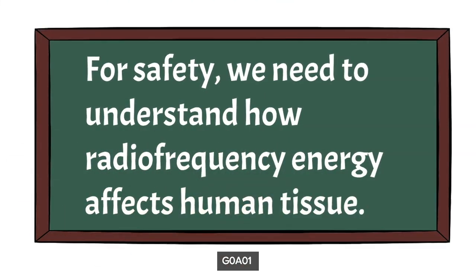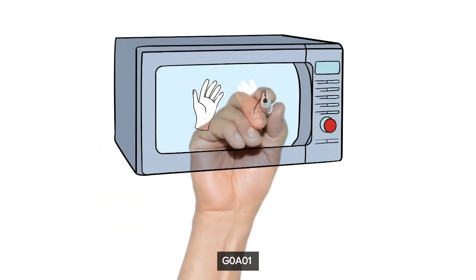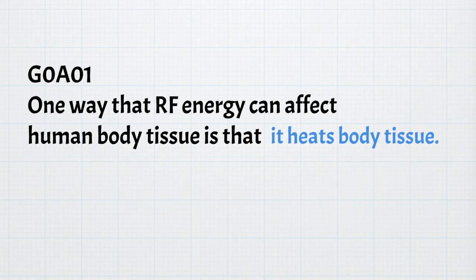Let's begin our safety lessons by understanding how radio frequency energy affects human tissue. Can you imagine your hands being inside a microwave oven? What do you think would happen if they were? Would it surprise you to learn that microwave ovens use radio frequency energy, typically in the 2.45 gigahertz range, which is in the UHF band? For the exam, you need to know that one way that RF energy can affect human body tissue is that it heats body tissue.